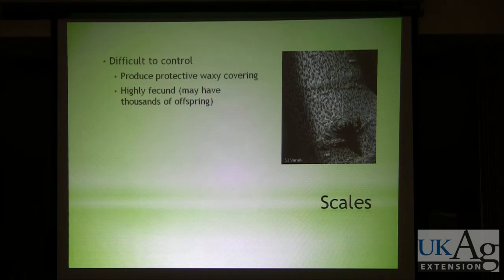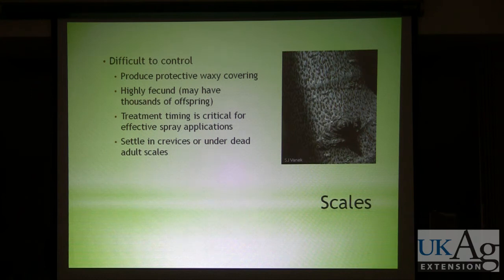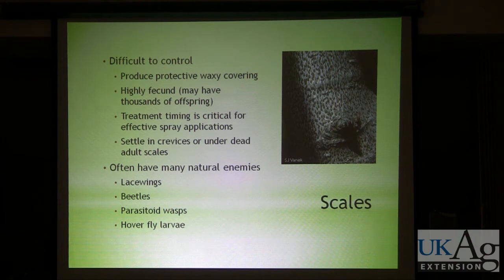Scales are pretty difficult to control with chemicals, especially sprays. They've got a protective waxy covering that protects them from spray applications. They can also be extremely fecund — depending on the species, one individual might produce three to four thousand offspring. Treatment timing is critical; you have to treat them during the crawler stage when the immatures are active and most vulnerable. Crawlers can also settle in crevices or under dead adult scales, providing some protection from sprays. Scales also have many natural enemies in the environment.